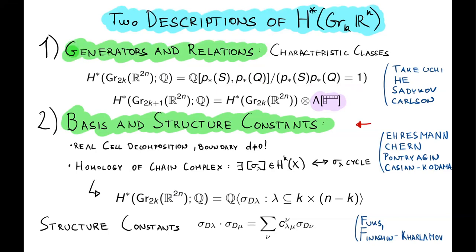In the situation when the dimension of the subspace is odd, there is again a subring which is generated by characteristic classes. However, there is an additional element which cannot be expressed in terms of characteristic classes. The easy way to see this is that these Pontryagin classes all have degrees divisible by four, and this is an odd degree class. This class turns out to be the fundamental class of a smaller Grassmannian, and it generates an exterior algebra.